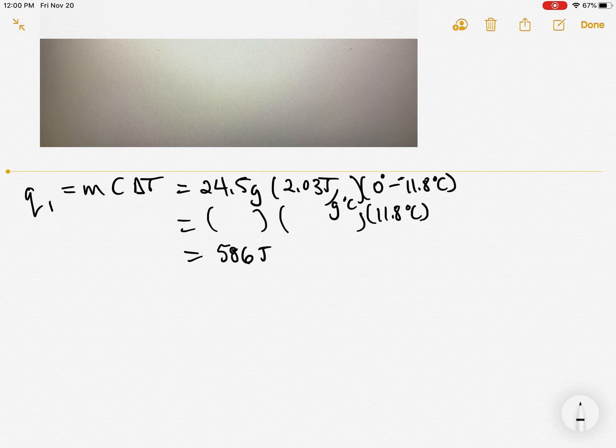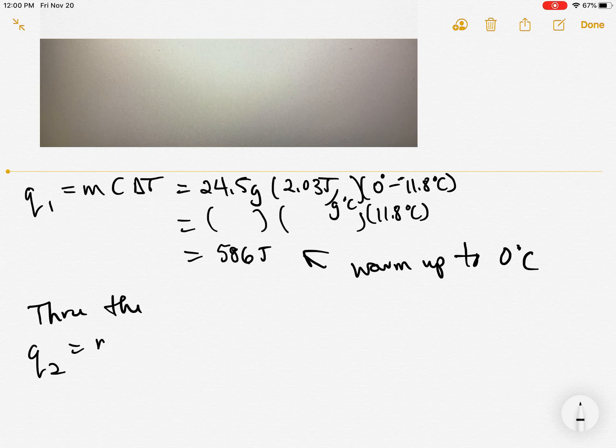So that's the amount of energy it takes to heat up the ice to that temperature of zero. Now you've got to take the ice through. So this is to warm up to zero degrees. And now we've got to take it through the phase change that takes energy. So this is our Q2 and it's M times delta H. It'll tell us how much energy it takes.